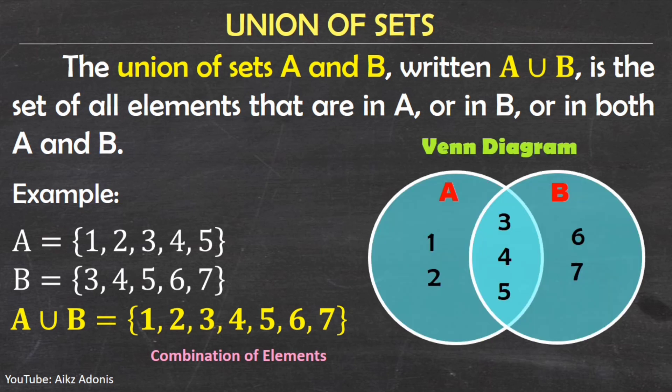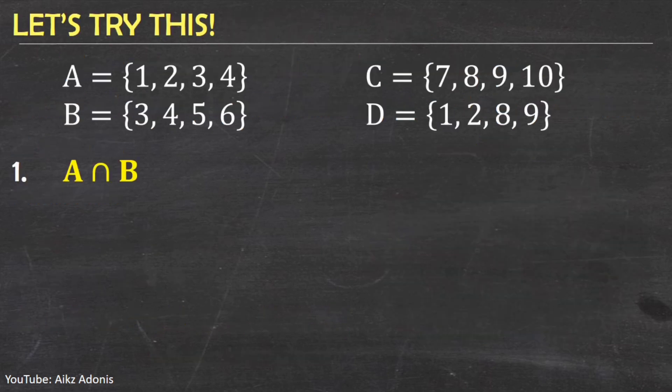We can also represent the union of sets using a Venn diagram. I use only one color to emphasize that the union of sets is the set of all elements in both A and B.